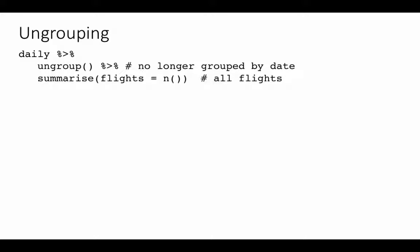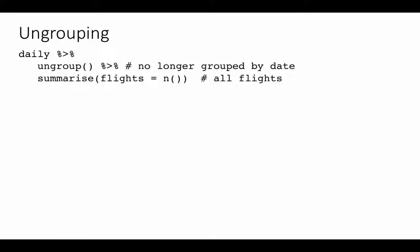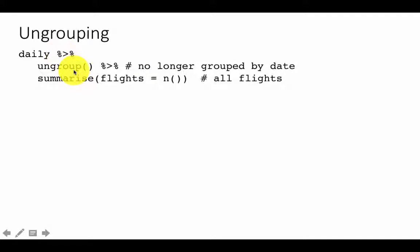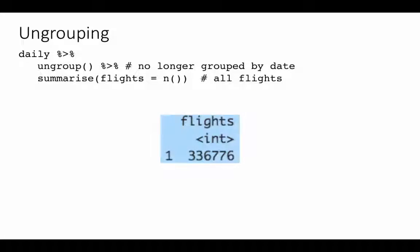We can do ungrouping. For example, here we have 'daily' which is grouped by year, month, and day. Suppose you want to ungroup it — you can pipe it to the function `ungroup()`, and then do `summarize(flights = n())`. Now we are doing the summarization on the ungrouped data, so you get back the total for the entire dataset. It treats the whole dataset as one group — 336,776, which is what we know.